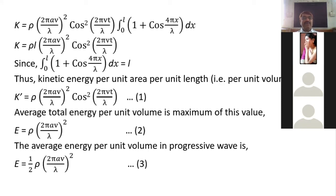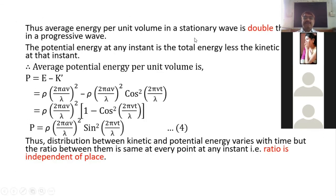The average energy per unit volume in a progressive wave (equation 3, from the previous chapter) is ½ · ρ · (2πav/λ)². Comparing with the stationary wave result (equation 2), the average total energy per unit volume in a stationary wave is double that in a progressive wave, confirming our theoretical concept mathematically.